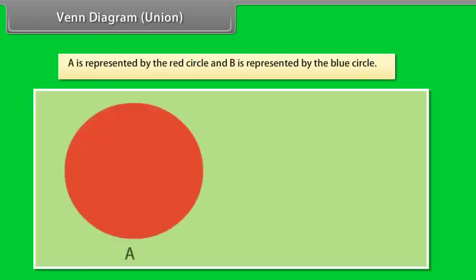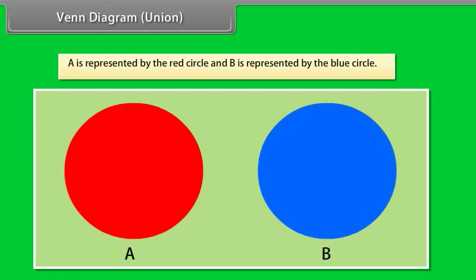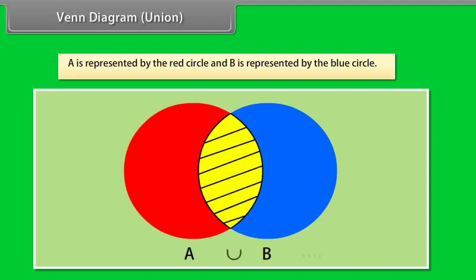Venn diagram: A is represented by the red circle and B is represented by the blue circle. The union consists of all points which are colored red or blue or yellow.